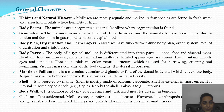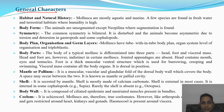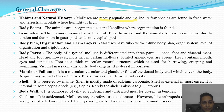The general characteristics of this phylum: first, habitat and natural history. Mollusca are mostly aquatic and marine. Few species are found in freshwater and terrestrial habitats where humidity is high. By body form, they are unsegmented, except Neopilina, which shows a little segmentation.